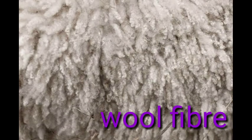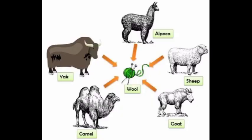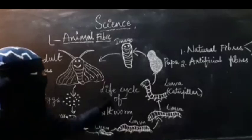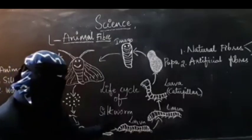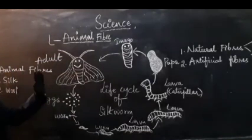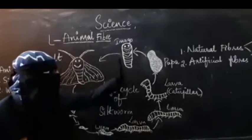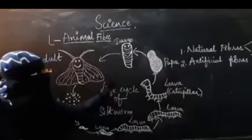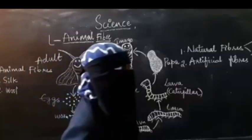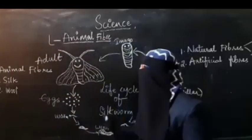Silk is obtained from the silkworm. The second animal fiber is wool. Wool is obtained from sheep, camel, etc. Wool is used for making clothes like sweaters, mufflers, gloves, etc. As you can see, I have drawn a life cycle of the silkworm. The fiber silk is obtained from the silkworm, and because of this cycle we are able to get the silk fiber.